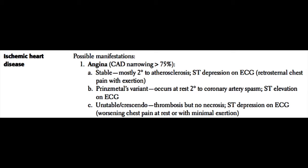Prinzmetal's angina occurs at rest and is due to coronary artery spasm. The coronary artery is made up of smooth muscle, and in some patients they have elevated activity of those smooth muscle cells to constrict and cause ischemic heart disease. These patients may actually develop ST elevations on electrocardiogram. The treatment for these usually is calcium channel blockers.